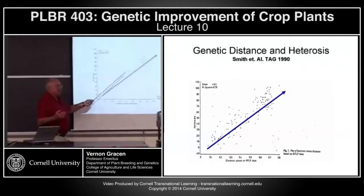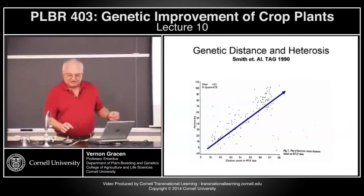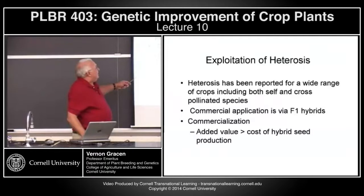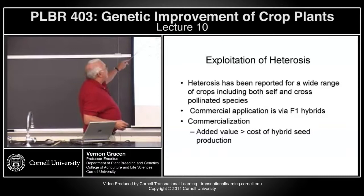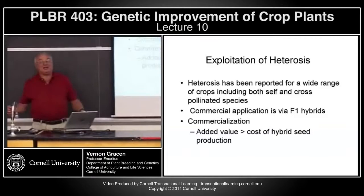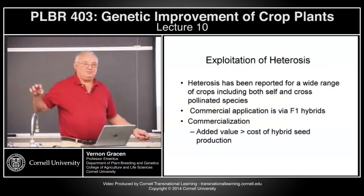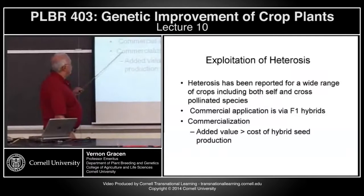This was sort of breathtaking at the time — the idea that all you have to do to get the best heterosis is cross things that are distantly related. Well, that doesn't quite work either, and we'll talk about that in a different lecture. Heterosis has been reported for a wide range of crops. The commercial application of heterosis is F1 hybrids. To some people, F1 hybrids is a bad word, but that's how you can most efficiently exploit heterosis.